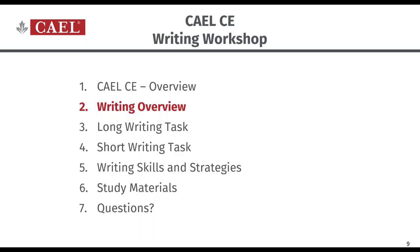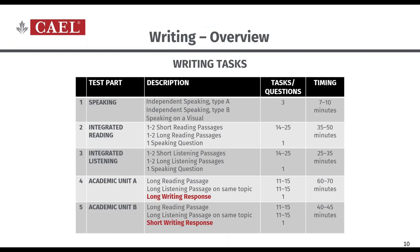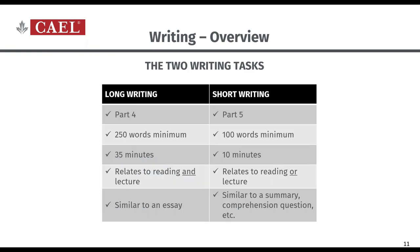Let's focus in on writing now. You've got a long writing task in Part 4 and a short writing task in Part 5. To write those responses you need to use information from the reading and the lecture — or sometimes you choose the reading or the lecture. The long writing task comes first in Part 4. We don't give you a word range; instead we give you a minimum word count. For the long writing, you have to write at least 250 words, and you have 35 minutes.